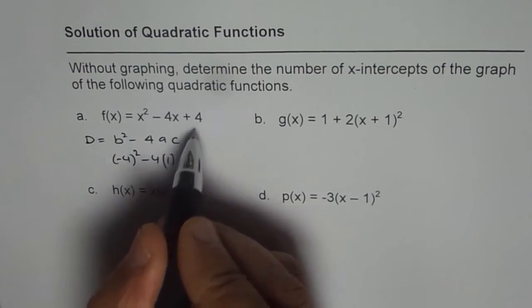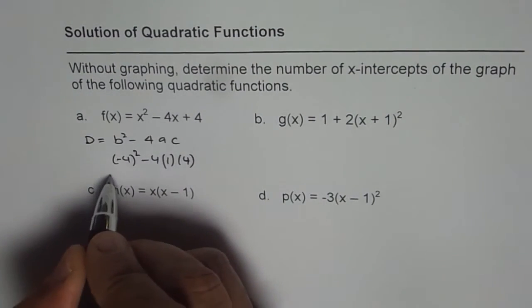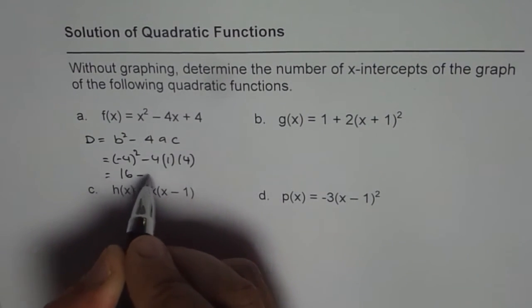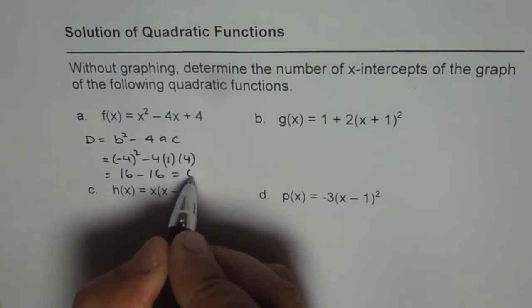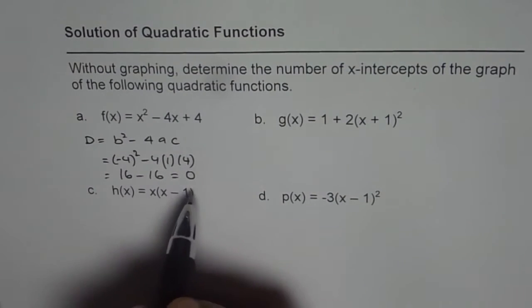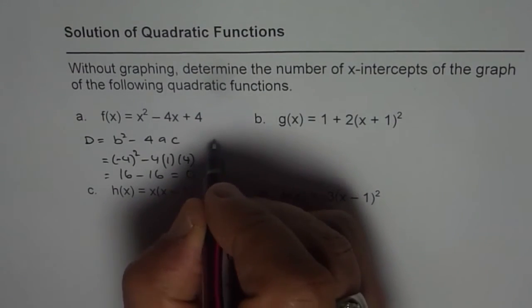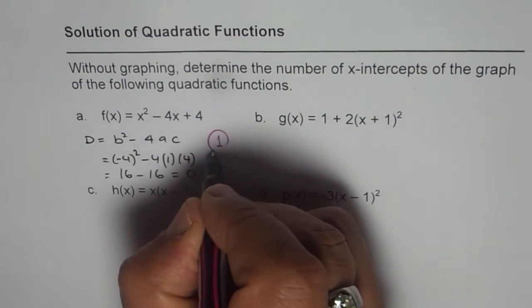and that gives you how much? (minus 4) squared is 16 and 4 times 4 is 16, the answer is 0. If discriminant is 0, then how many x-intercepts do you expect? The answer is just 1. So that is the answer for a.